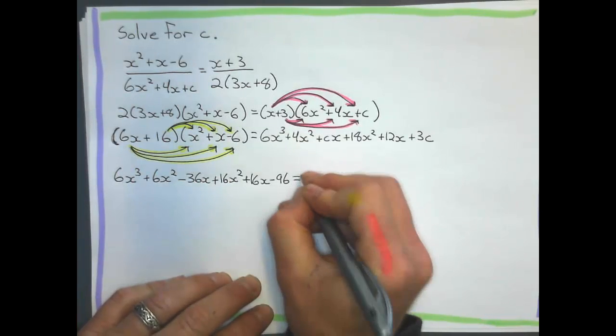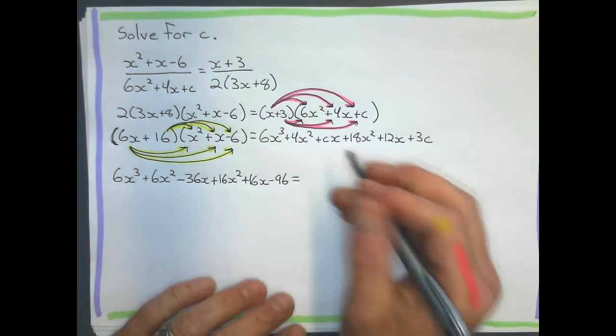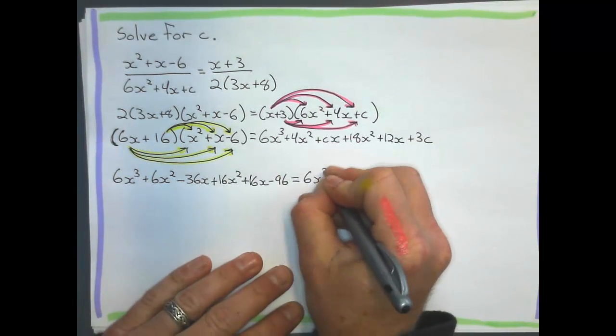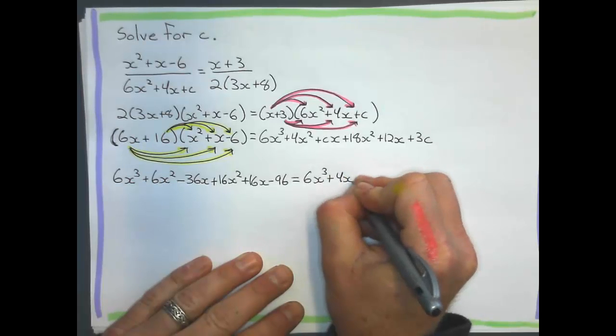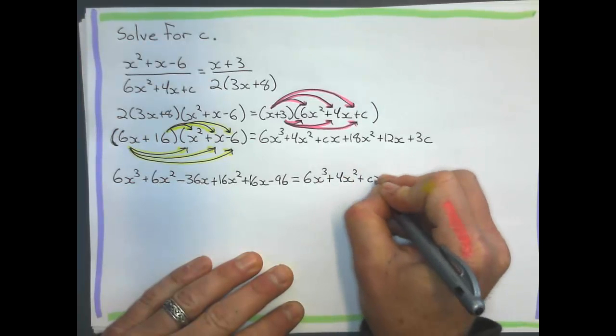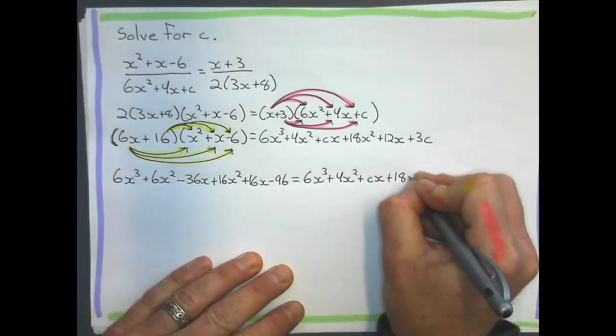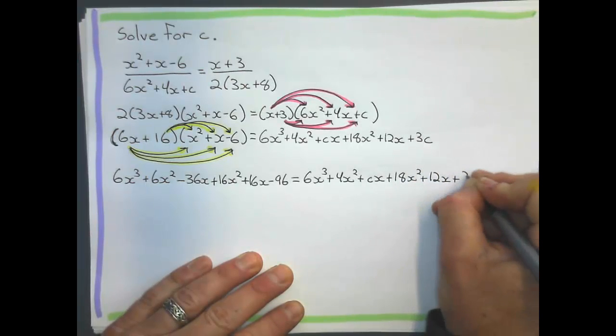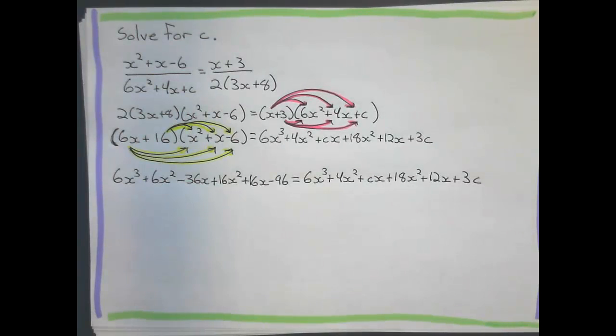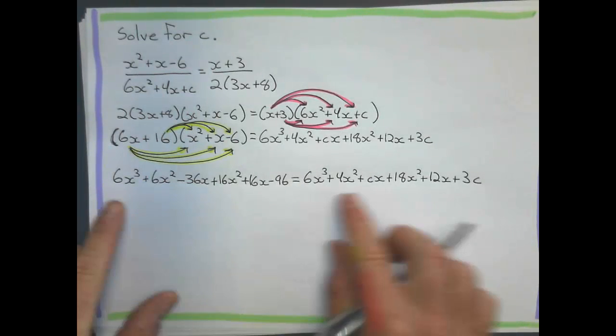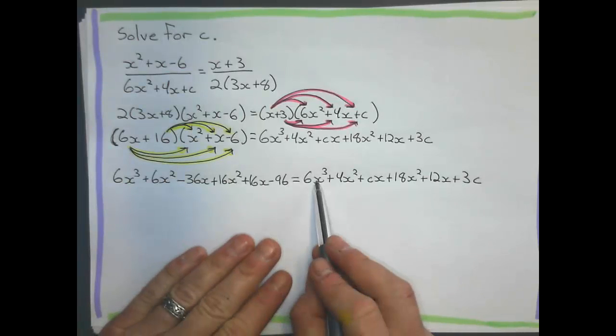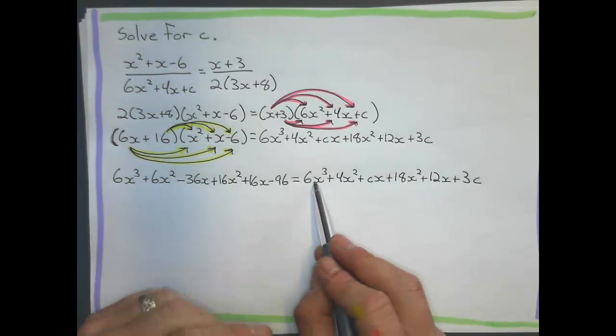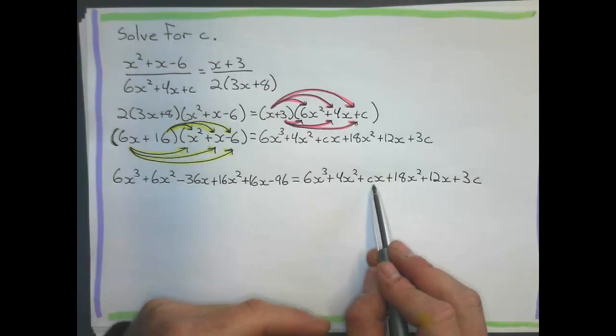And now what I'm going to do is take the 16 and multiply that through. Getting kind of crowded here, but that's okay. And when I take that 16 and multiply that through, I get positive 16x squared plus 16x. And finally, 16 times negative 6 gives me a negative 96. And I make that equal to this big long expression that I worked out here. 6x cubed plus 4x squared plus Cx plus 18x squared plus 12x plus 3C. Wow, what a long equation here we have. However, we look at it. We always want to write it in descending powers of x. So, x cubed, x squared, x to the 1.